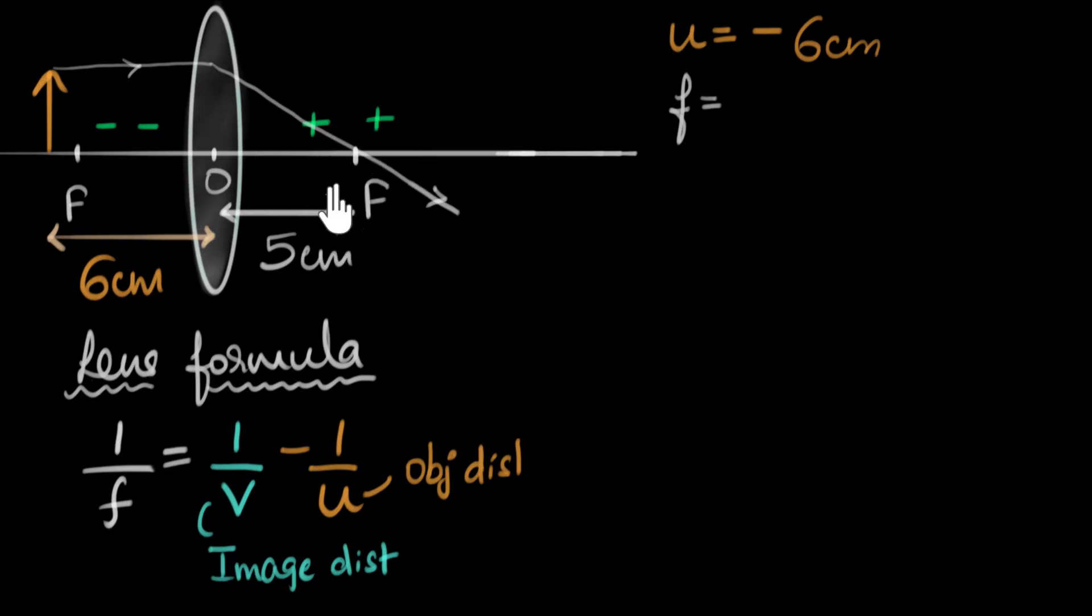And as a result, we're going to call the focal length as positive, because this focus lies on the positive side. So f is going to be positive five centimeters.